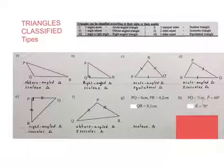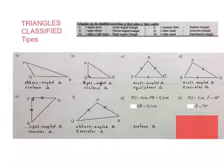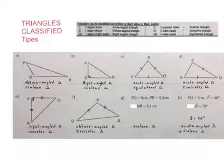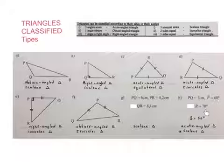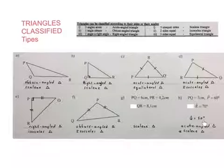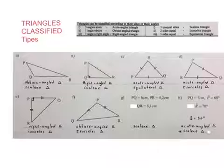For this one, I must look at the information given. One angle is 60 degrees and the other is 70 degrees. If I add them together, I get 130 degrees, and that means the remaining angle will be 50 degrees. That makes this an acute angled triangle.